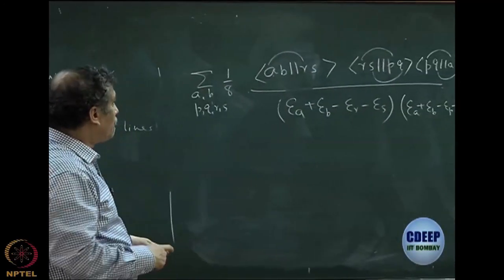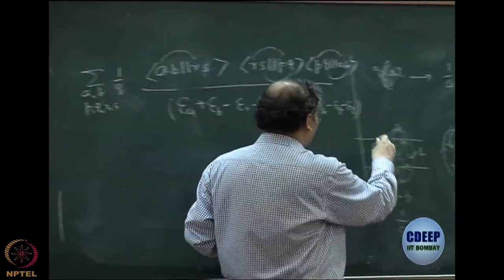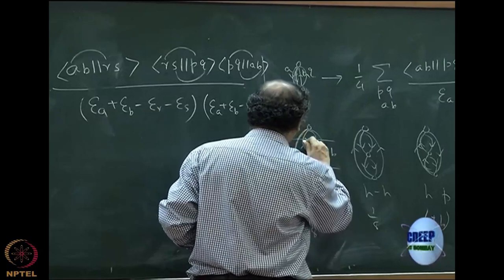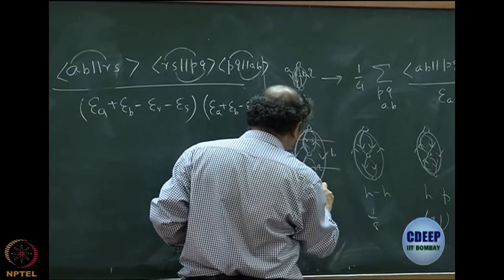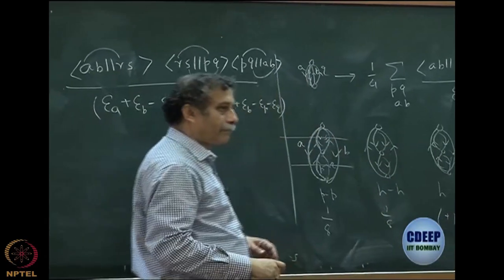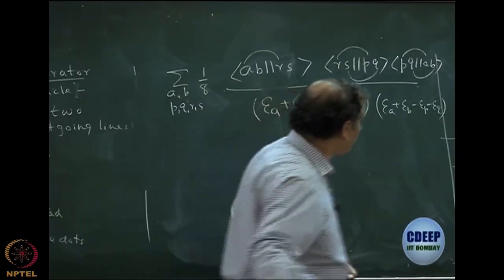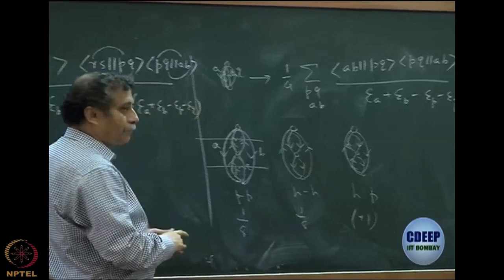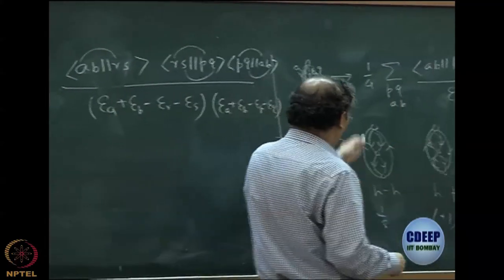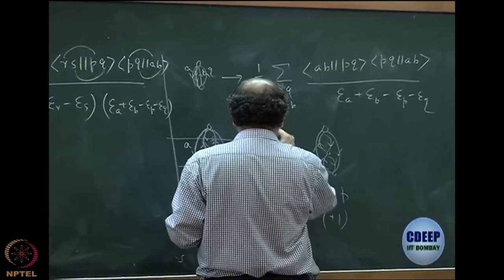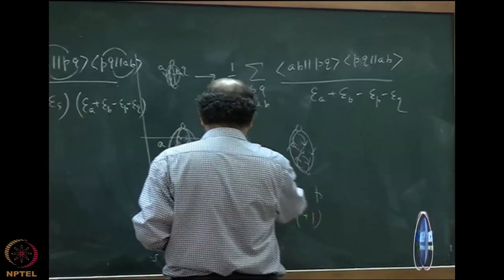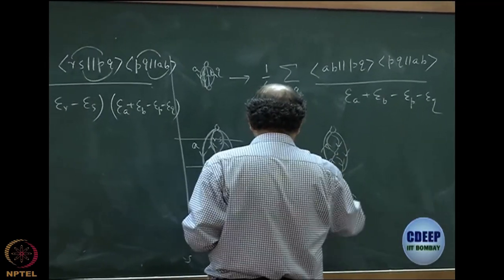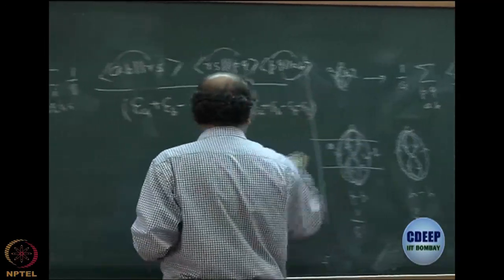Here you have two loops. The loops are very clear: one loop goes here and comes back — that is one loop. The second loop goes from here, goes here, and comes back. So there are two distinct loops. Similarly for the hole-hole diagram: the first loop follows one path and comes back, the second loop follows the blue line and comes back. Again there are two loops, and of course there are two hole lines, so this gives a plus sign.